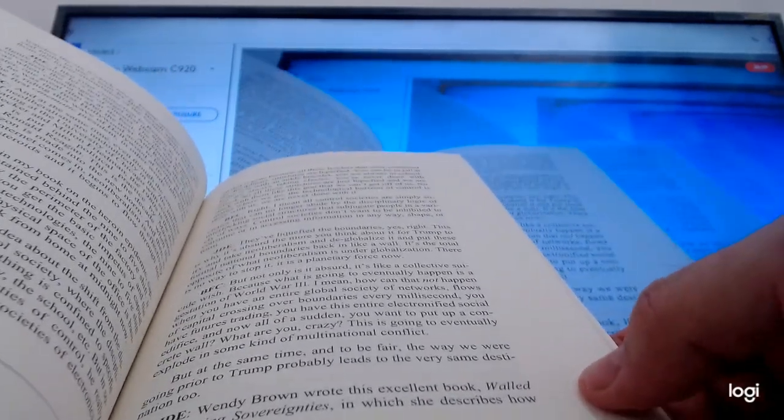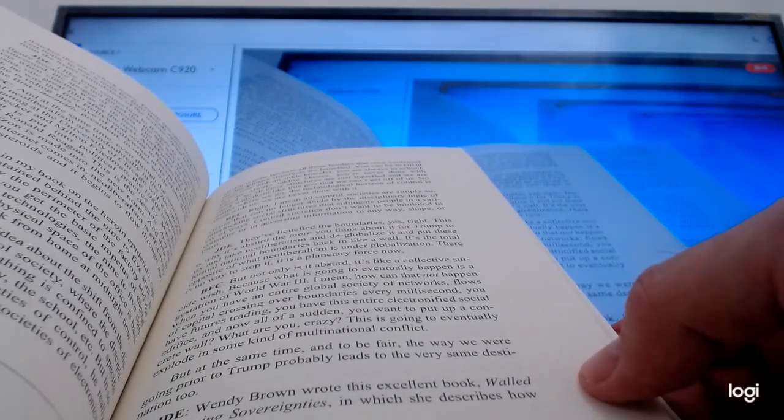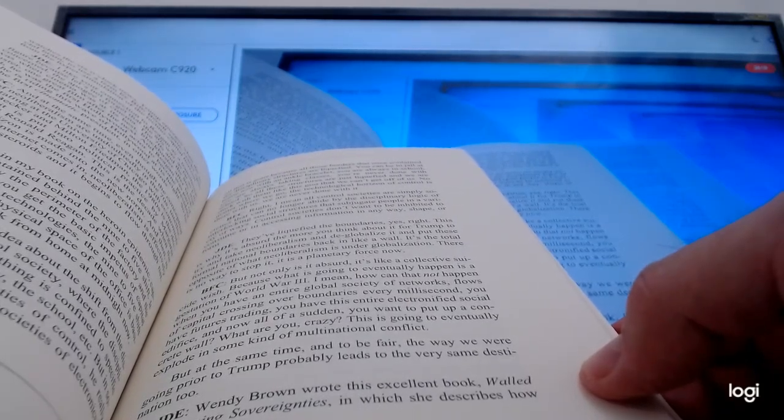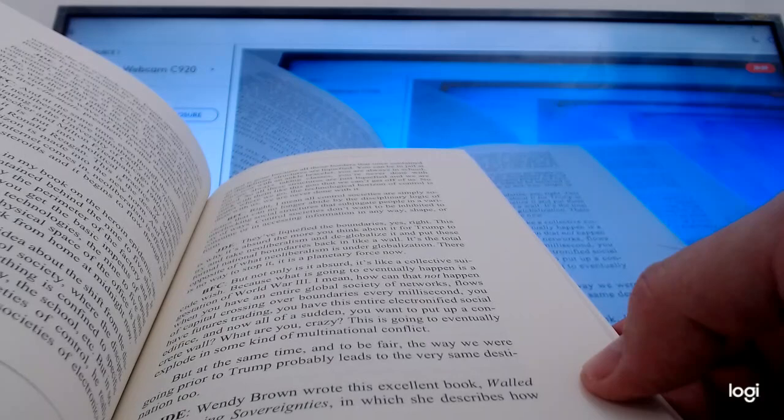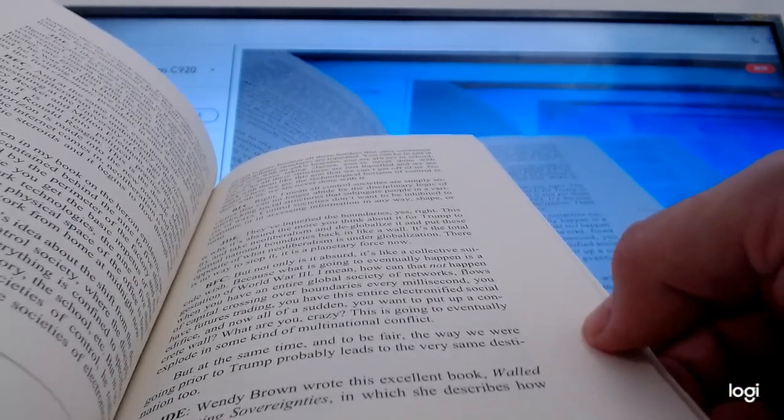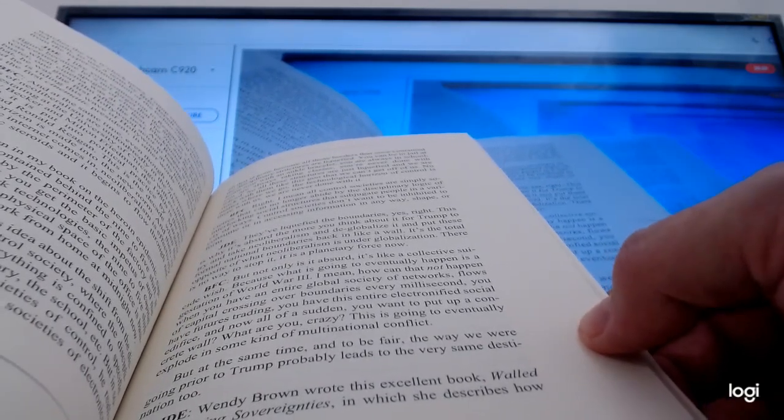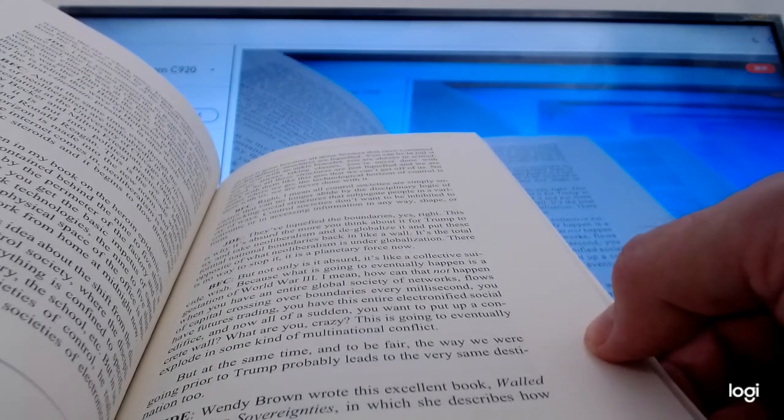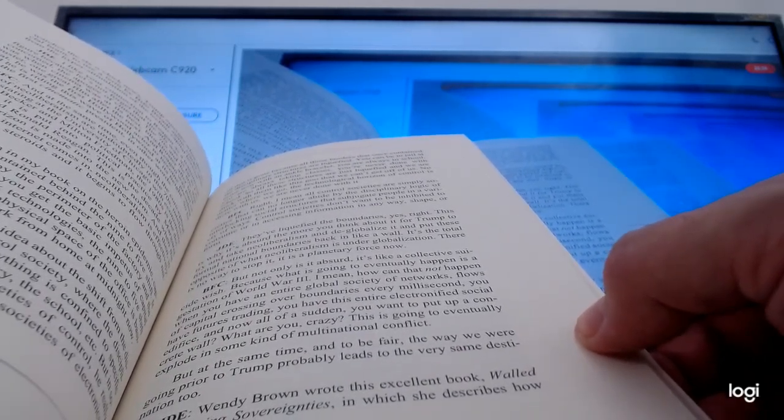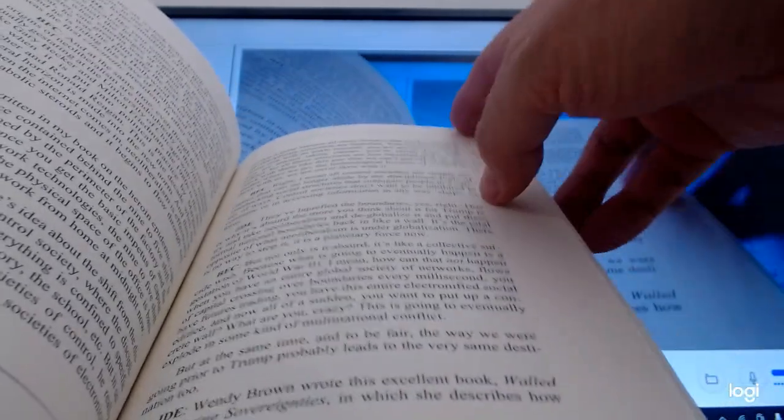As I've written in my book on the heroin epidemic, capitalism was once contained behind the 9-to-5 shift. It was once contained by the perimeter of the factory and the office building. Once you get the basic impetus of capital integrated with network technologies, the 9-to-5 shift becomes irrelevant. The physical space of the office is basically pointless. People work from home at midnight now. Ebert: This is Deleuze's idea about the shift from the disciplinary society to the control society where the disciplinary society is modular. Everything is confined to specific boxes, like the prison, the factory, the school. But in societies of control, and by societies of control he really means surveillance societies, the societies of electronics, all that is gone.